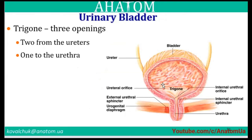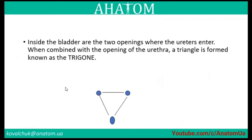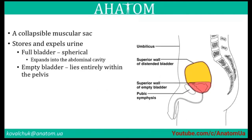The urinary bladder is a collapsible muscular sac that temporarily stores urine. The mucous membrane presents the trigone — three openings: two openings from the ureters (right and left ureteral orifices) and one internal urethral orifice with an internal sphincter. The two openings where the ureters enter, combined with the opening of the urethra, form the trigone.